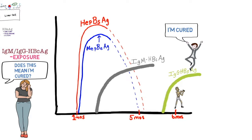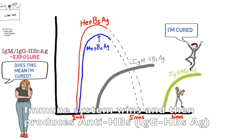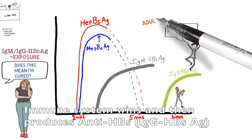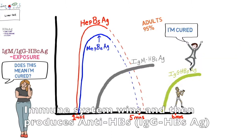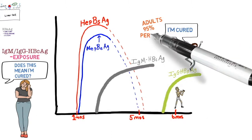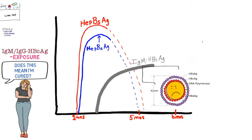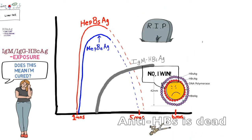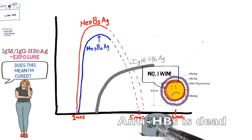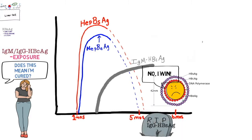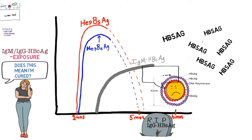If we win, IgG hepatitis B surface antigen saves the day and the patient is cured. Fortunately, the adult immune system wins 95% of the time, then begins producing anti-HBs antibodies. However, if acquired perinatally, you only win 5% of the time. If the virus wins, there is no anti-HBs immunity — this becomes a chronic infection.